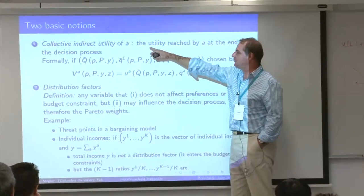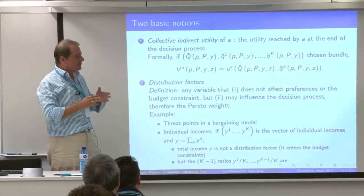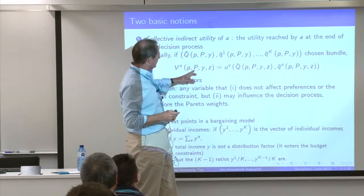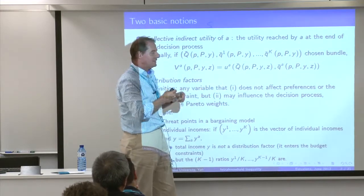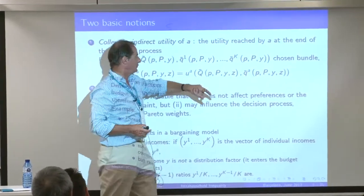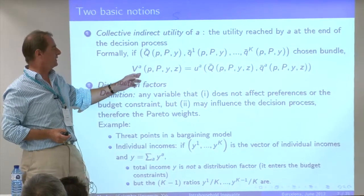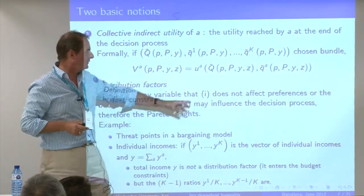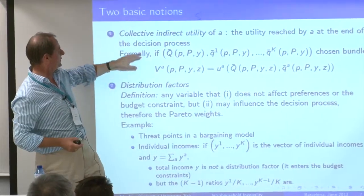Two notions. One is the notion of collective indirect utility. Conceptually it's very simple: those people make decisions according to some decision-making rule — the only assumption is that it's efficient. Given prices of the private and public goods, total income, and the way they make decisions, they will end up with a vector of public consumption and a vector of private consumption for each person. The utility that person A ends up with is what I call the collective indirect utility. It's not the standard indirect utility because it depends not only on your preferences but on the whole decision process, including the other person's preferences.